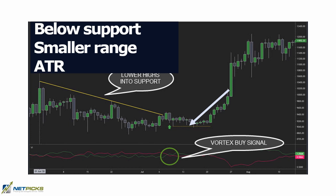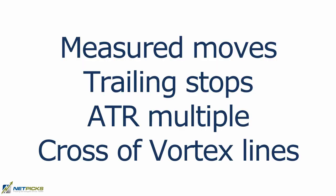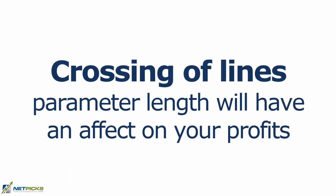There are many ways to take profits. We can use the measured move of the height of the larger consolidation — the downsloping trend line to the support. We can use a trailing stop to ride the trend, or a multiple of the ATR such as two or three ATR for trade management. You could also wait for a crossing of the lines to take profits. Keep in mind that if you use a line crossing for an exit, the period length will affect your profits — too tight and you risk whipsaws; too long and you may ride too much negative price action.